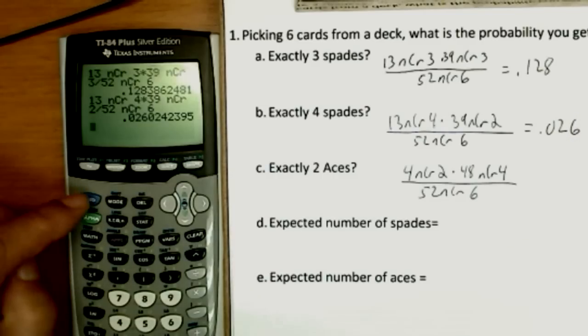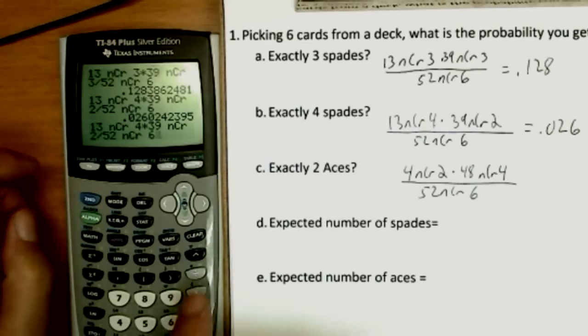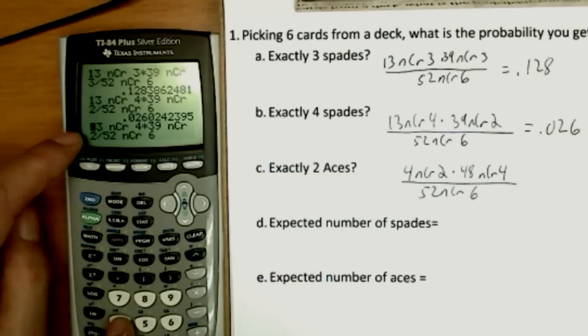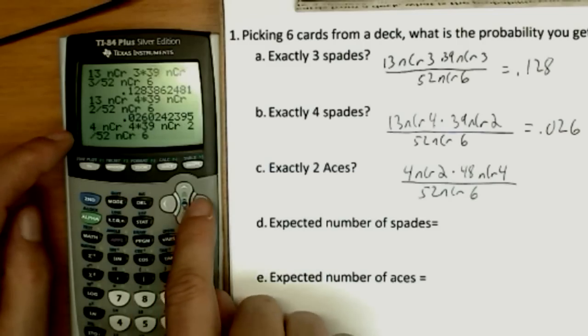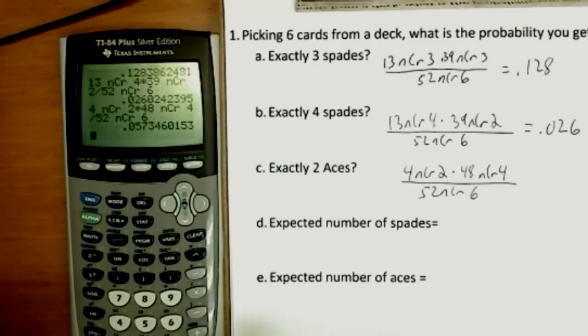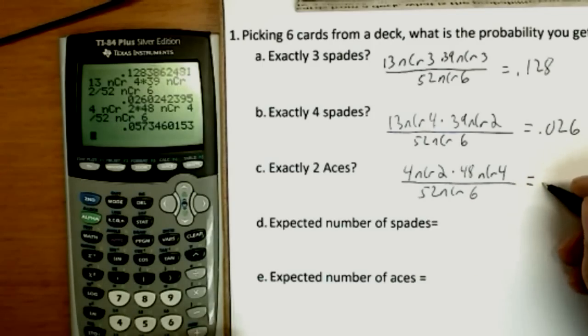Two aces. Okay, now I've got to do a few other changes as well. Instead of four here, I'm going to put a 13 here, I'm going to put a four. Delete. Four choose two. 48 choose four. The bottom stays the same. And just that quick, I get the probability of getting two aces, 0.057. So I'm more likely to get two aces than four spades, it looks like.